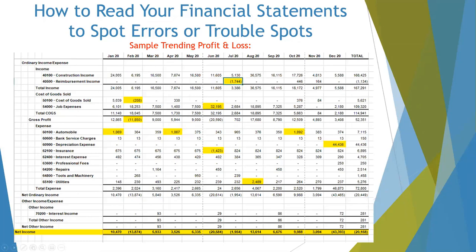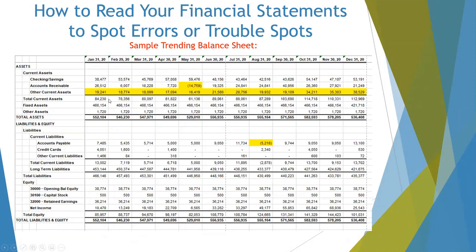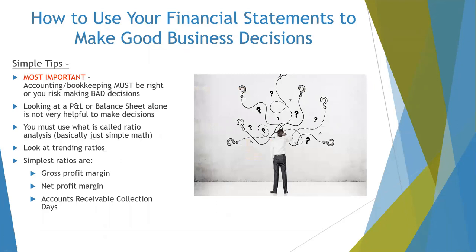Let's take a look at a trending balance sheet — same thing, looking at every single month. Accounts receivable is negative in May; well, accounts receivable is what your customers owe you, so logically it shouldn't be negative — we want to take a look at that. Other current assets went up from $19,000 to $38,000 at the end of the year, so we might want to dig into that increase. And accounts payable is negative at -$5,218 — again, this shouldn't be negative because it's money you owe to your vendors. You want to look at them on a trending basis, collapse them, and look for those problem areas.